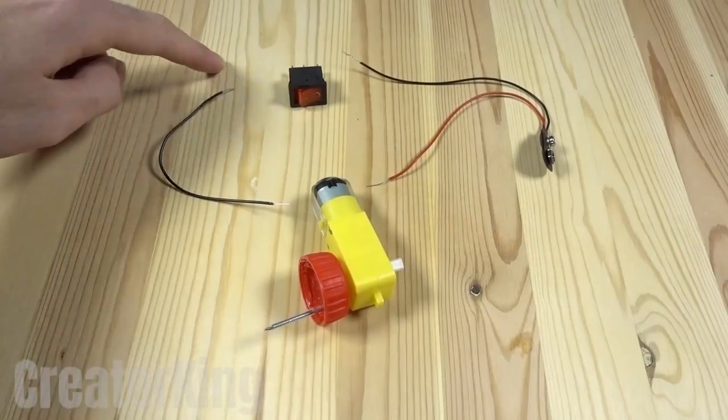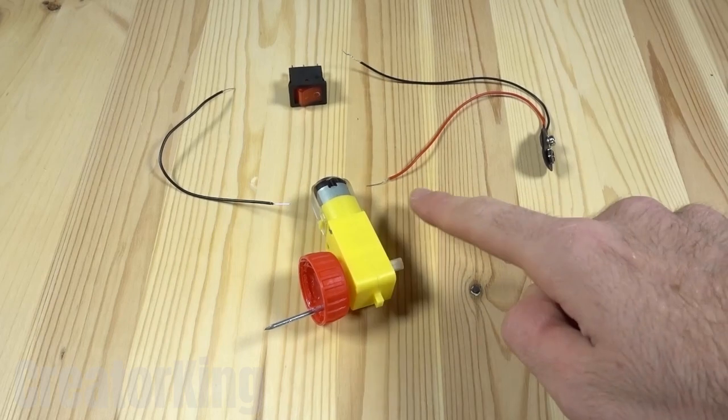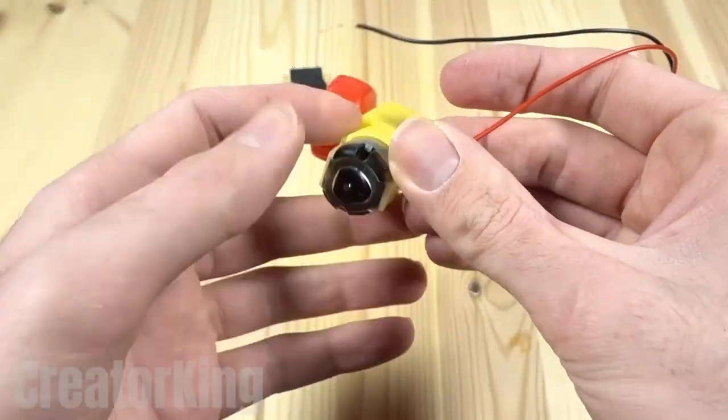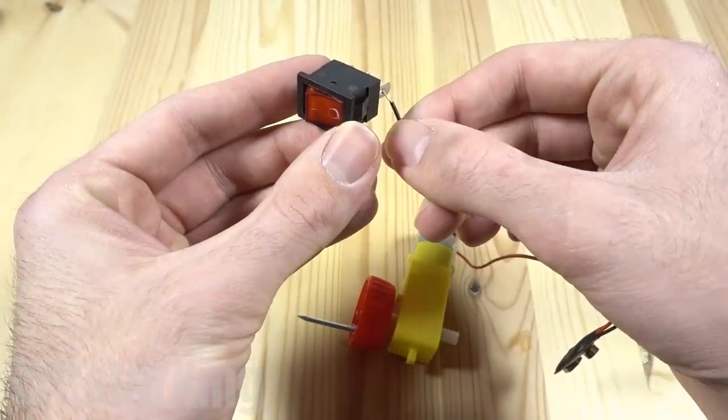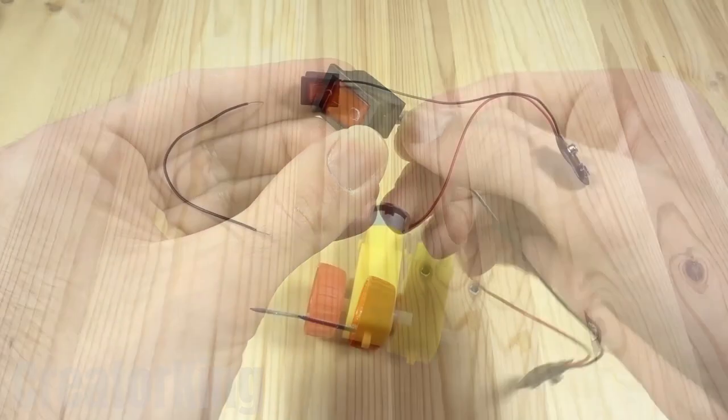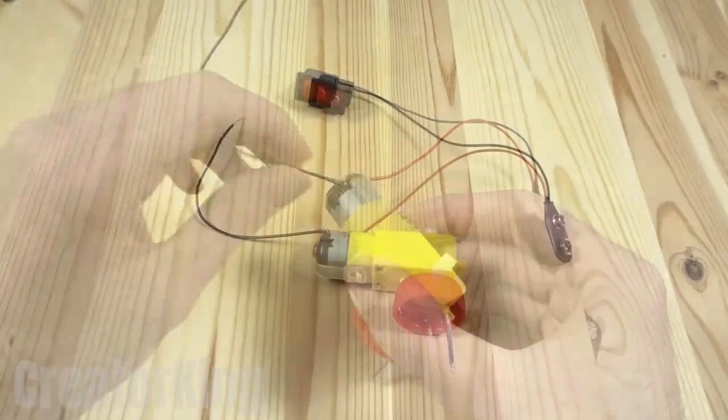Connect the cables to the motor and the switch the way you see here. Let's start with the red wire that will attach to one of the small pins on the motor, then the black one to the switch, and so on until you have assembled the circuit. It would be very boring for me to narrate the rest of this simple step.